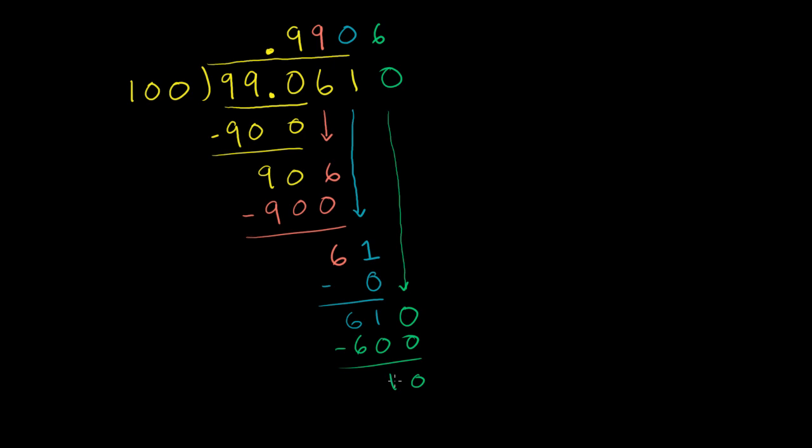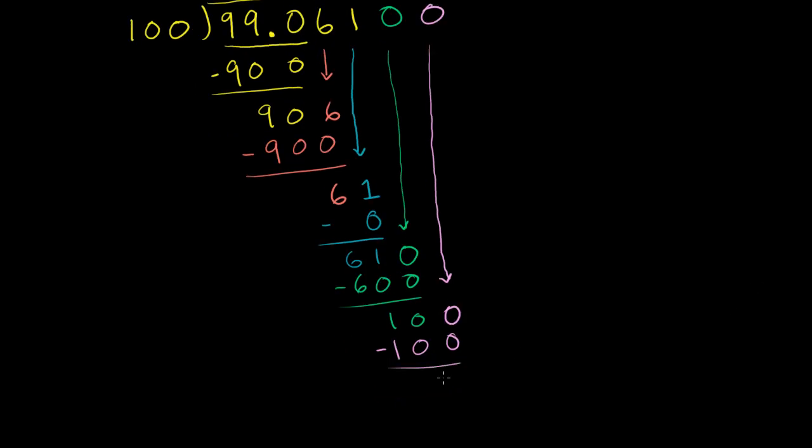We don't want to have a remainder, so we keep going. So let's throw another 0 here and bring it down. So we have another 0 there. 100 goes into 100 exactly one time. 1 times 100 is 100. And then now when you subtract, we have no remainder. And we are satisfied. And we're done.